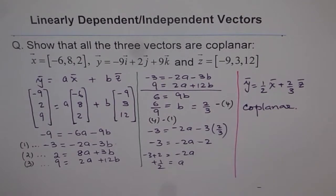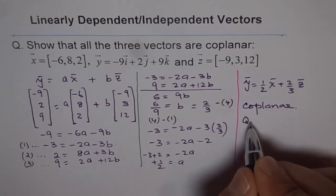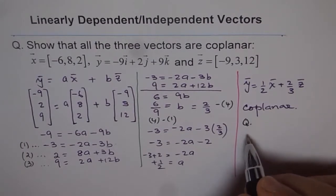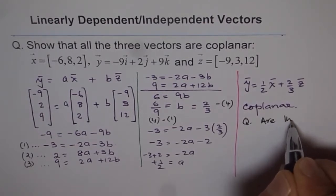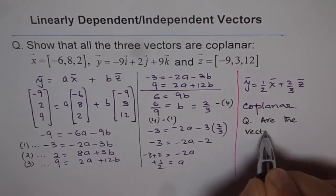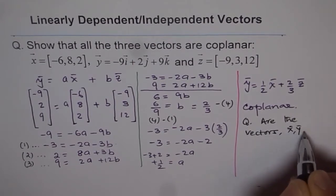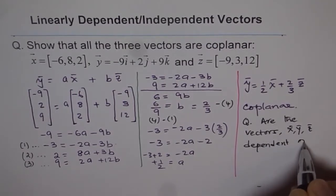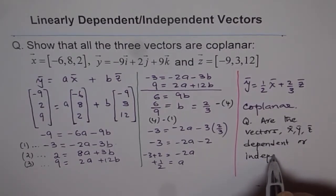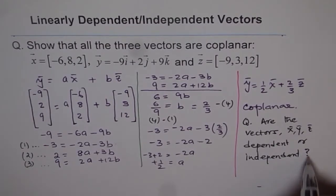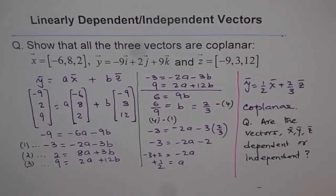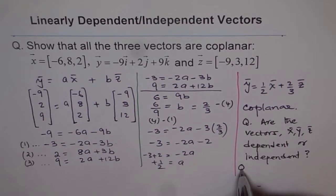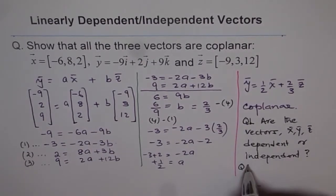Now here is a question for you. The question for you is, are these three vectors dependent or independent? So the question here for you is, are the vectors x, y and z dependent or independent? So you need to answer this question. So what do you understand by dependent or independent vectors? This is what is one question and second question is, let me write question 1 and question 2.